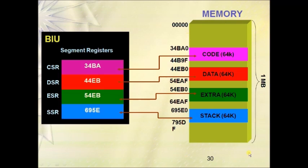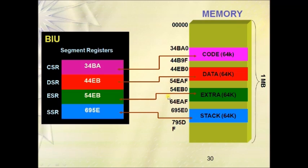Looking at an example: the memory starts from address zero. Code, data, extra, and stack segments are assigned somewhere in the memory, each of size 64 kilobytes. The code segment starts at address 34BA0 and ends at 44B9F. The distance between the starting and ending address is 64 kilobytes. Since the segment address is 20-bit but the segment register can only hold 16-bit, it stores the upper 16-bit address — 34BA — inside the Code Segment Register (CSR). Similarly, DSR, ESR, and SSR hold the upper 16-bit address of their respective segments.